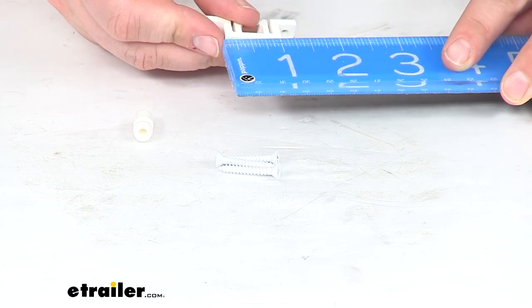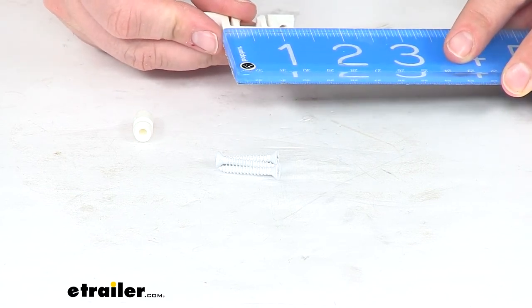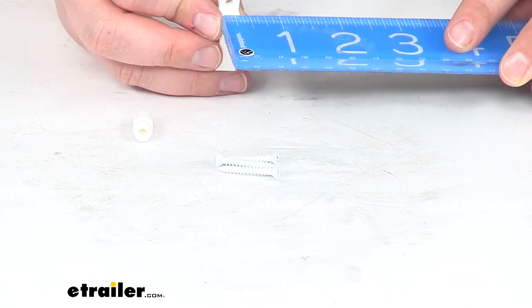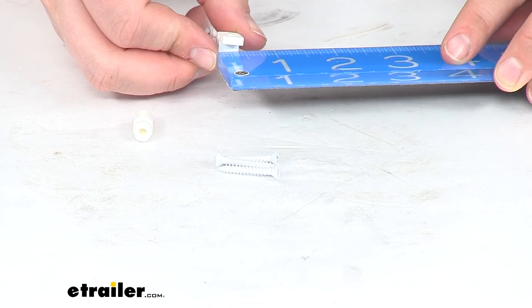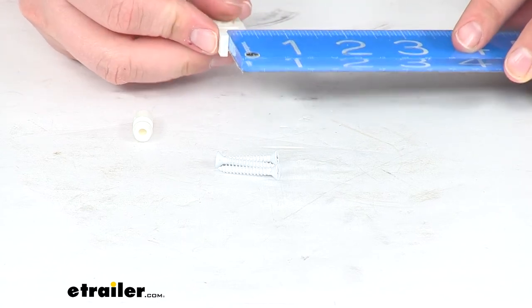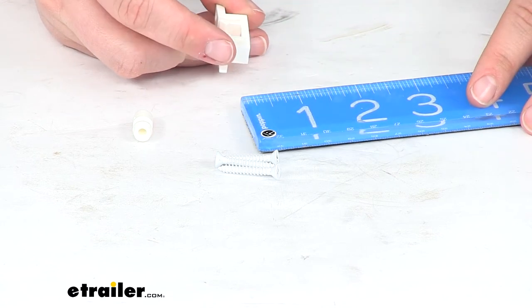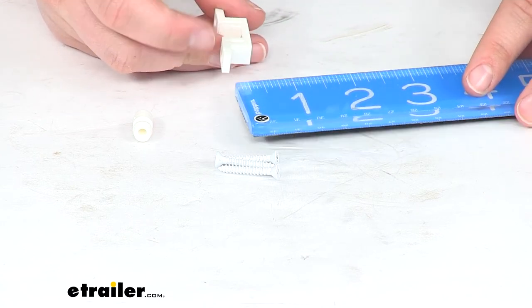The cutout needs to be an inch wide by at least three eighths of an inch thick and then about a half inch deep. And that's so that this portion can be in there as well.